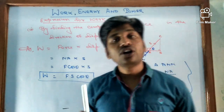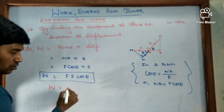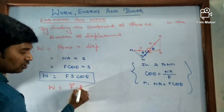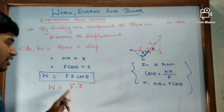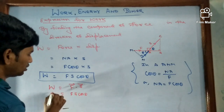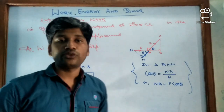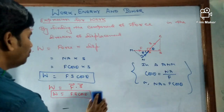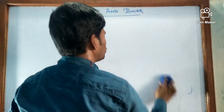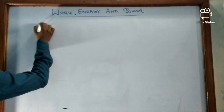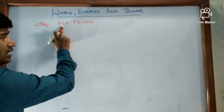We can also write this as: work = force vector dot displacement vector. In other words, work is the dot product of force and displacement vectors. This dot product definition also gives F S cos θ, the same result. Since it is the dot product of two vector quantities, work is a scalar quantity.